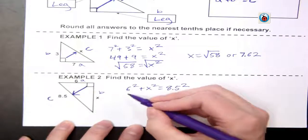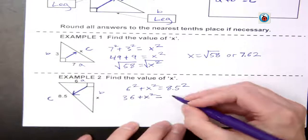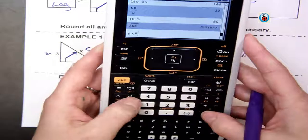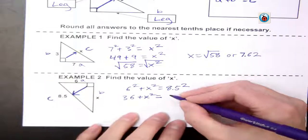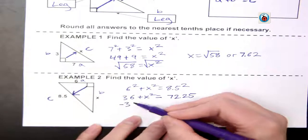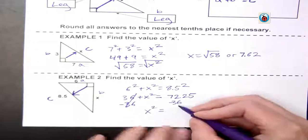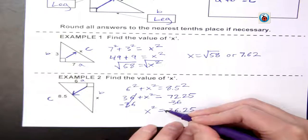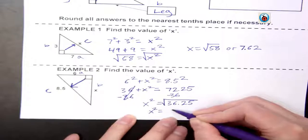Then I do the math: 6 squared is 36, plus x squared. 8.5 squared—I'm going to use the calculator to help me. The x squared button is what I use for that. It gives me 72.25. To solve for x, I subtract 36 from both sides. That gives me x squared equals 36.25. I take the square root of that, which gives me x equals 6.02.